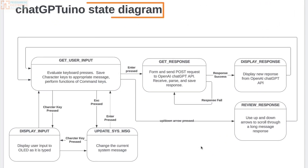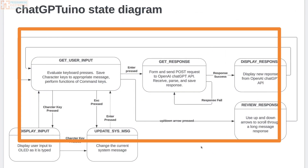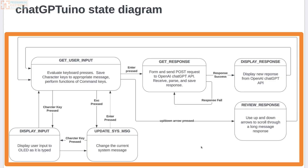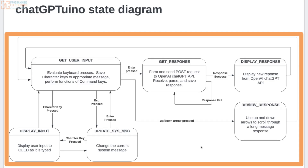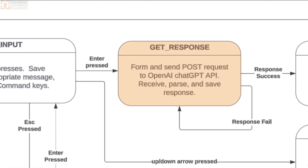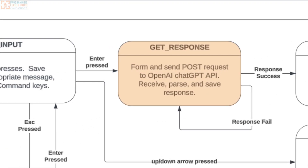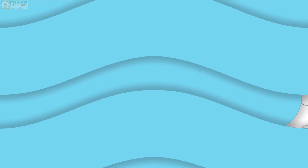So what's a state diagram? A state diagram is a visual tool that's used by software developers and other stakeholders to help design a program. You can think of a program as a system of states, where a state represents a snapshot of the entire system at a given time. Let's say we made a state diagram of cleaning a car — it might look something like this.